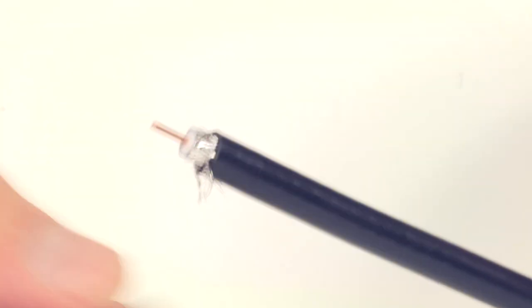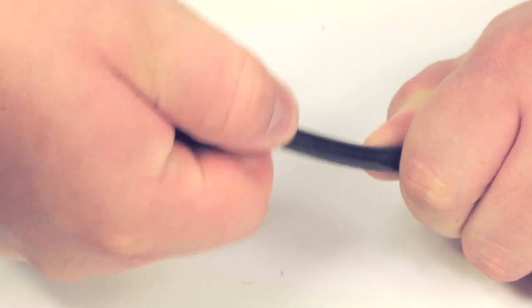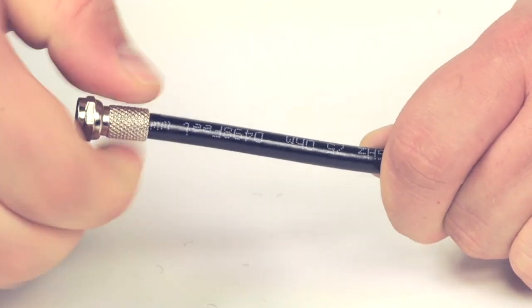Pull back the braided shield and begin to insert the connector. Simply push the connector onto the cable, apply pressure and twist to make contact with the cable and complete termination.